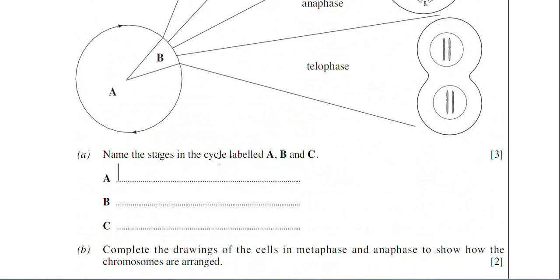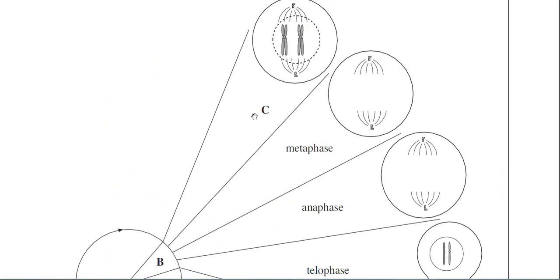So let's label these. Name the stages in the cell cycle labeled A, B and C. A is going to be interphase. It's the longest stage of the cell cycle, approximately 23 hours it takes. Part B, or section B, is mitosis. And part C then is the first stage of mitosis and that would be prophase.